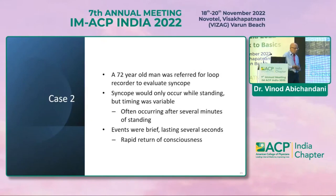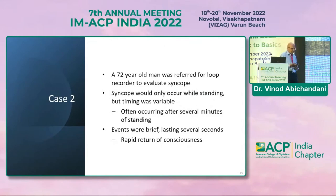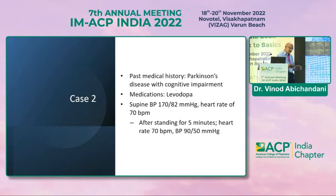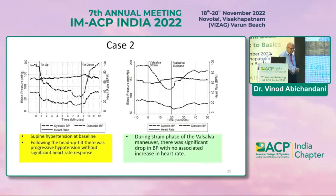Case 2: A 72-year-old man was referred for implantable loop recorder insertion to evaluate syncope. Syncope occurred only while standing, with variable timing, often after several minutes of standing. Events were brief lasting several seconds with rapid recovery of consciousness. He had Parkinson's disease and was on levodopa. His supine BP was 170/82 mmHg with heart rate at 70 beats per minute; after standing for five minutes the heart rate remained the same but BP dropped to 90/50 mmHg.